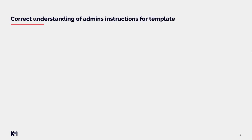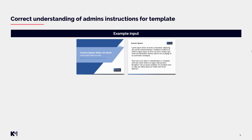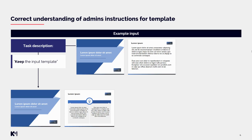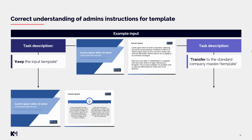Now we will move to correctly understanding admin's instructions for templates. Here we have an example input. Let's imagine a situation where the task description says 'keep the input template.' The word 'keep' is very crucial here because that means we will work in the same template as shown in the input file — the template does not change. The situation would be very different if the task description says 'transfer to standard company master,' 'convert to client's template,' or 'attached template.' Those words suggest that we are not keeping the input template — we are transferring or converting slides to some other template, which you will find attached in your task.